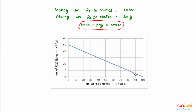One more interesting thing we can see from this graph is that as the number of ₹10 notes increases, the number of ₹20 notes decreases. For example, if the number of ₹10 notes is 20, the number of ₹20 notes is 40. But if the number of ₹10 notes becomes 60, the number of ₹20 notes decreases to 20.